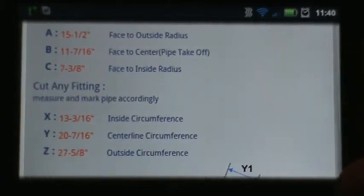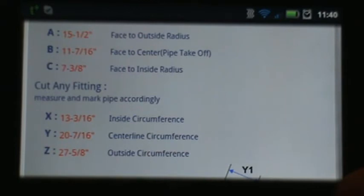As you can see here the six values are generated: A, B, and C. A is the face to outside radius. B is the face to center which is your take out of your fitting. C is your face to inside radius.